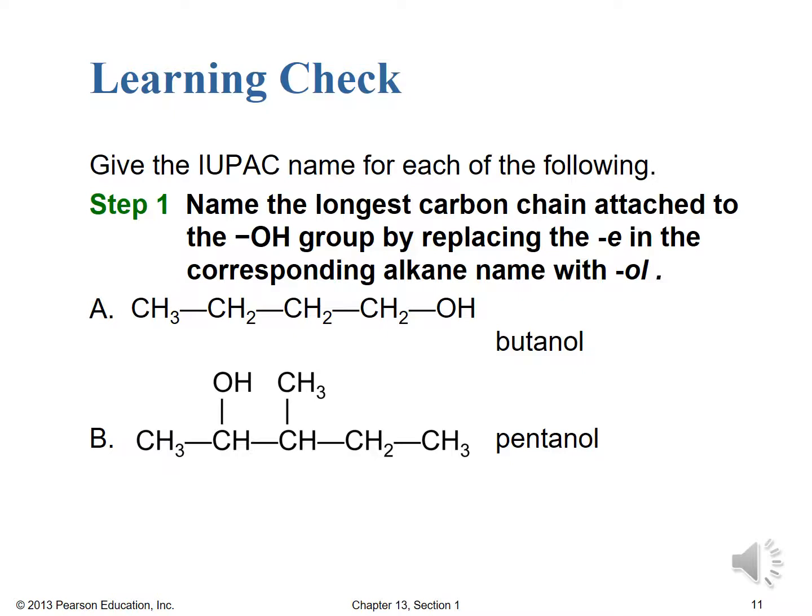For step one, name the longest carbon chain with the OH group and replace the E ending with OL. For structure A, it's a linear four-carbon chain making it butane, changed to butanol, with the OH on the last carbon from left to right. For structure B, counting five carbons left to right gives pentanol — pentane with the E replaced by OL to indicate the OH group.